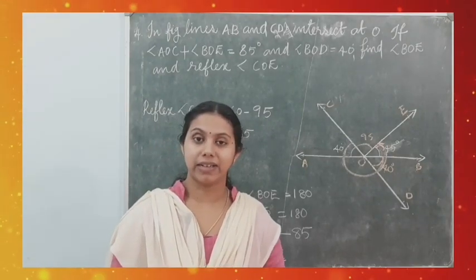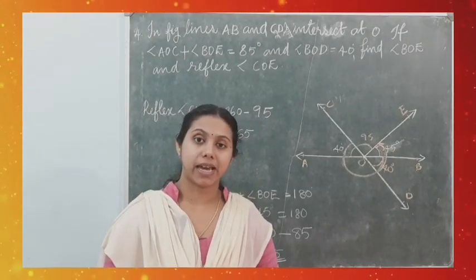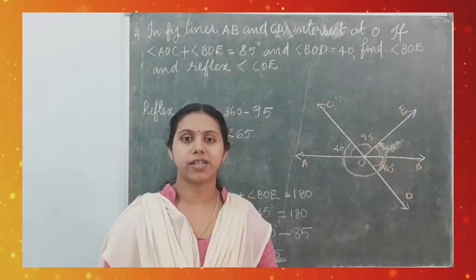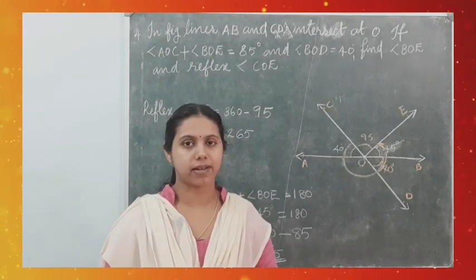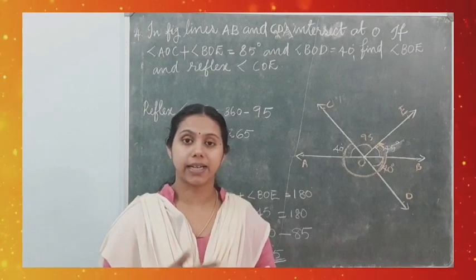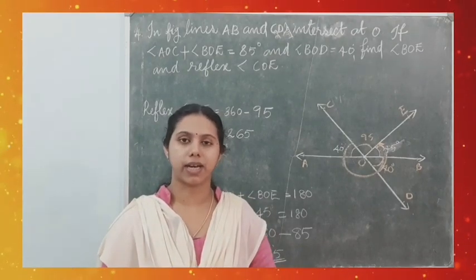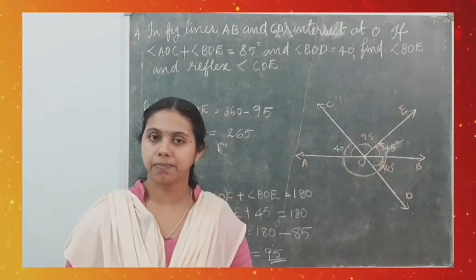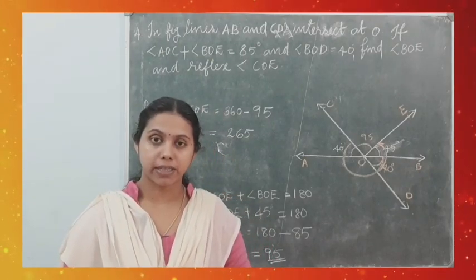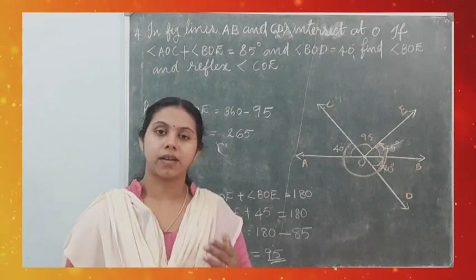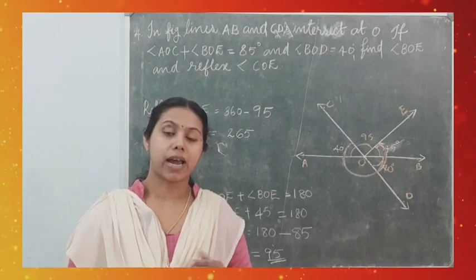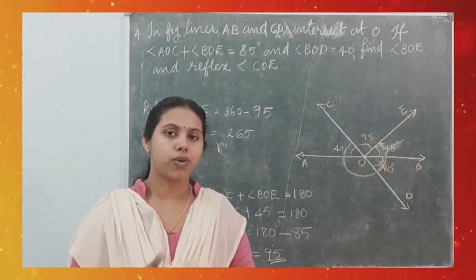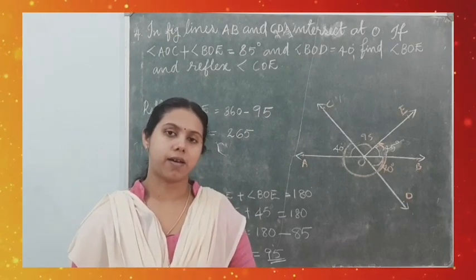Today we learned the basic terms and definitions: what is a line, line segment, angles, different types of angles, adjacent angles, linear pairs, and vertically opposite angles. Then we studied the linear pair axioms and one theorem — if two lines intersect each other, then the vertically opposite angles are equal. Using these axioms and theorems, we solved two or three problems.